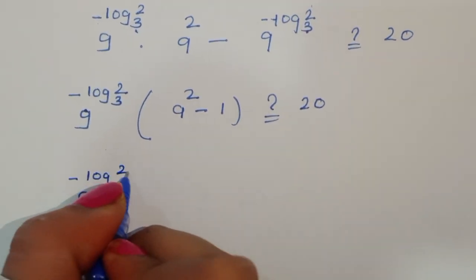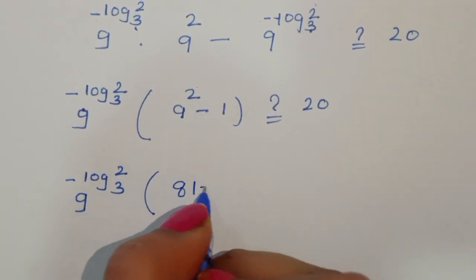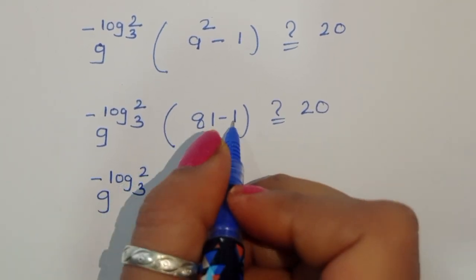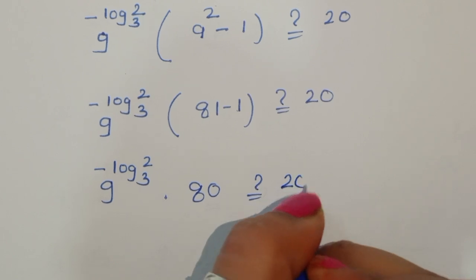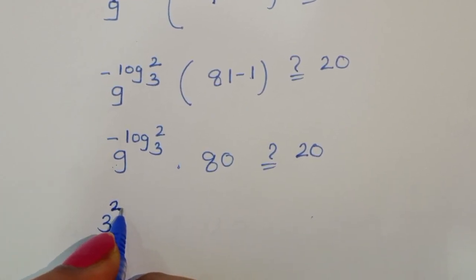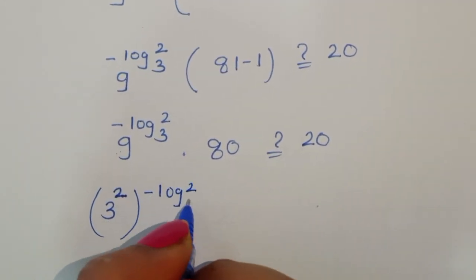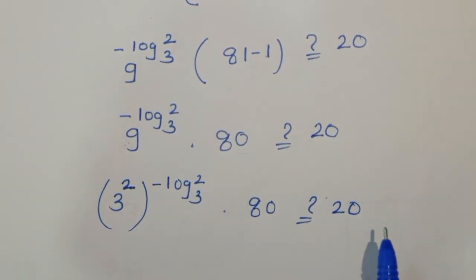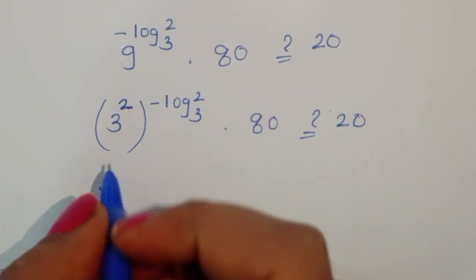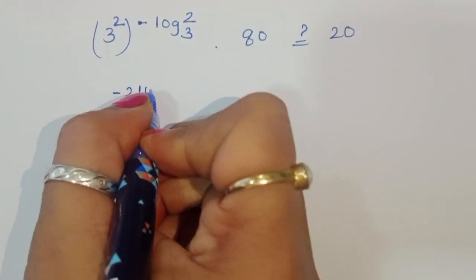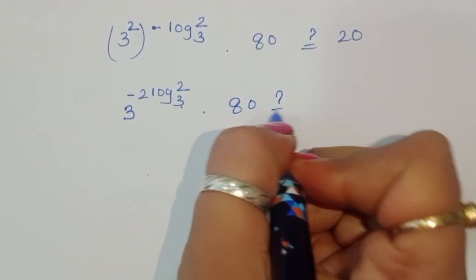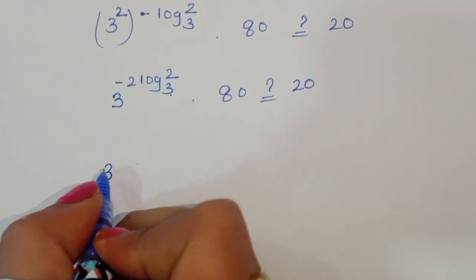Factoring out 9 power (minus log base 3 of 2), we get 9 power (minus log base 3 of 2) times (9 squared minus 1), which equals 9 power (minus log base 3 of 2) times 80. Now we write 9 as 3 squared, so 3 squared power (minus log base 3 of 2) equals 3 power (minus 2 log base 3 of 2), times 80.